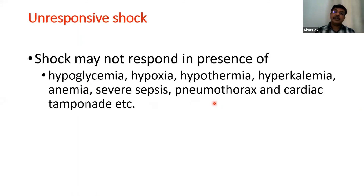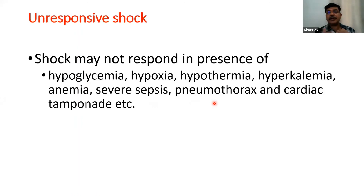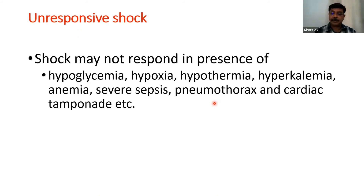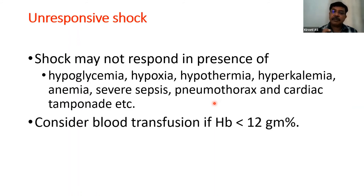Pneumothorax and cardiac tamponade may cause obstructive shock that will not respond to routine measures. To check for pneumothorax in the SNCU, switch off all lights and use a warm light (transillumination) on either side of the chest — if translucency is found, drain the pneumothorax. If hemoglobin is less than 12 g/dL, arrange for blood transfusion to improve oxygen-carrying capacity.